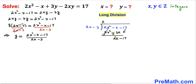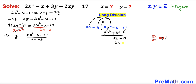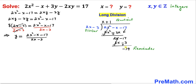We repeat the process: 2x divided by the leading term 2x reduces to 1, so we write positive 1 as the next quotient term. Multiplying 1 by the divisor gives 2x minus 3. Subtracting again, the 2x terms cancel and we are left with negative 14 as our remainder. So x plus 1 is our quotient and negative 14 is the remainder with divisor 2x minus 3.